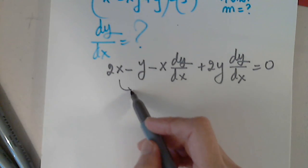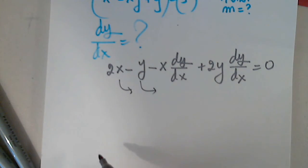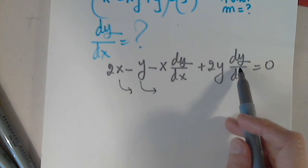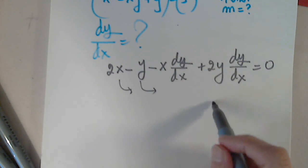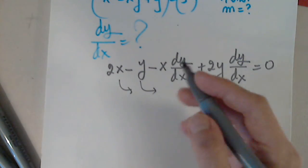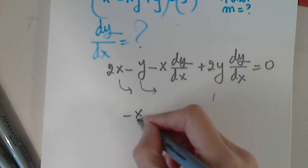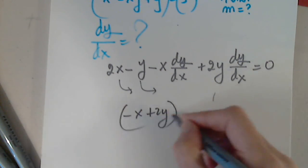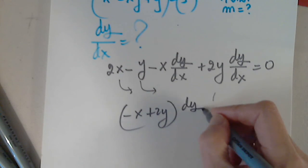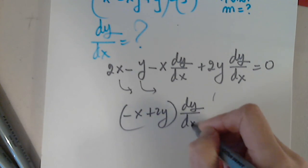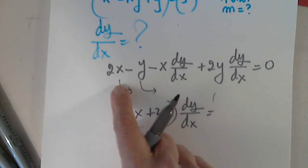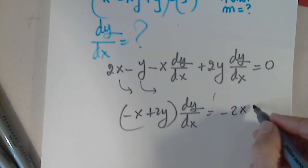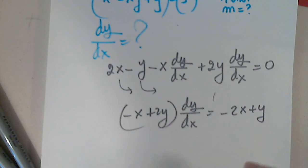Some terms cancel, and here I will factor out dy/dx. We get negative x plus 2y times dy/dx. The remaining terms go to the other side: negative 2x plus y.